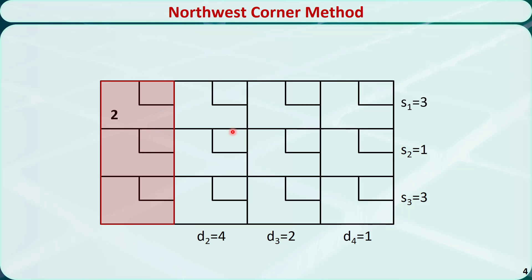Now we need to find the Northwest Corner cell in the remaining tableau, which is this cell. We need to allocate as much as possible to the selected cell and subtract the allocated amount from supply S1 and demand D2. The largest amount we can allocate is 3, because allocating more than 3 would make S1 negative. We put 3 here and subtract it from D2 and S1. D2 will be 1, S1 will be 0. We need to cross out the first row and remove S1 because S1 is 0.